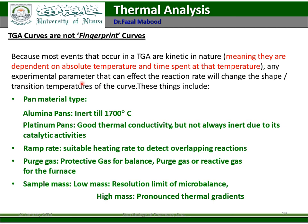TGA curves are not fingerprint curves because most events that occur in TGA are kinetic in nature, meaning they are dependent on absolute temperature and time spent at the temperature. Any experimental parameters that can affect the reaction rate will change the shape and transition temperature of the curve. These factors include pan material type — aluminum pans or platinum pans — ramp rate, purge gas, and sample mass.